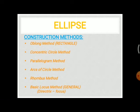There are six different types of methods generally used in engineering drawing. The first one is the oblong method, also known as the rectangle method, where the ellipse is constructed within a rectangle. The second one is the concentric circles method, where two circles are drawn using the major axis and minor axis, and from these two circles the ellipse is constructed.